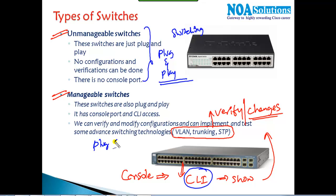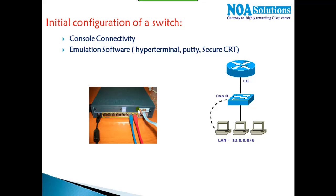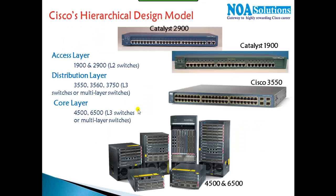Manageable switches are also plug-and-play — you can still use them without any configurations — but we can do a lot of configurations for advanced switching options. Unmanageable switches are found in small networks, whereas manageable switches give us command line access to manage the device. That leads us to the Cisco hierarchy.